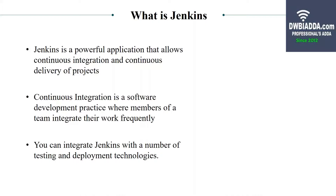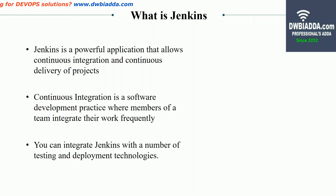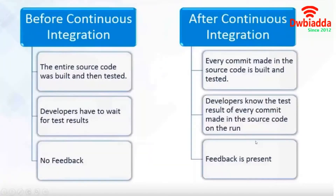Continuous integration is a software development practice where members of a team integrate their work frequently. It is a broad term with various factors included. You can integrate Jenkins with a number of testing and deployment technologies. The biggest benefit of Jenkins is that it can be attached to various types of deployment technologies, supporting the entire software lifecycle.